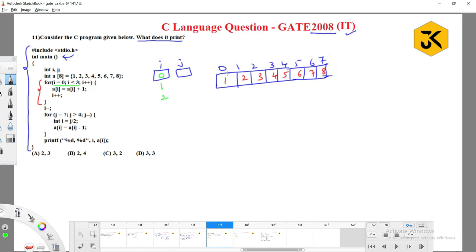a of zero equals a of zero plus one, that means one plus one is two. Then i value incremented. Observe guys, observe guys, here they have incremented i two times.